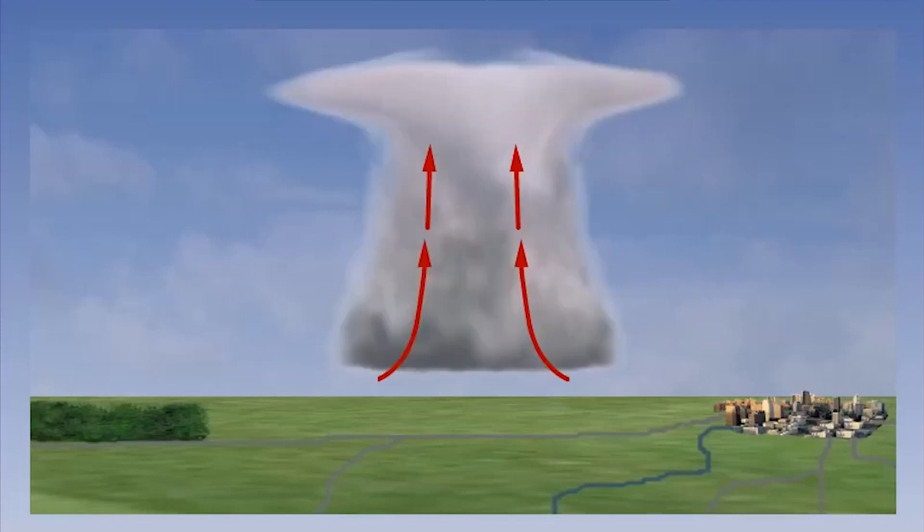There is one added concern with large cloud developments, particularly the cumuliform type. When precipitation falls from clouds, it tends to drag air down with it, creating downdrafts within and underneath the cloud.